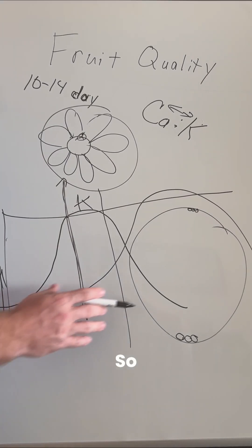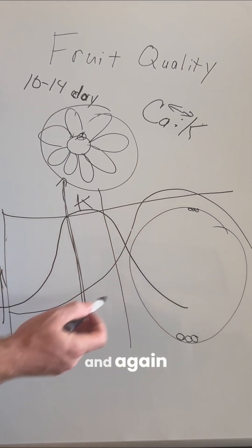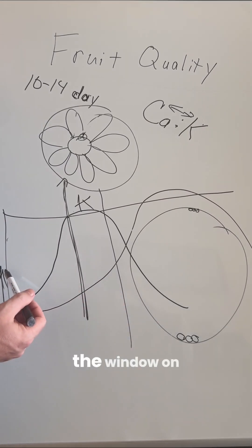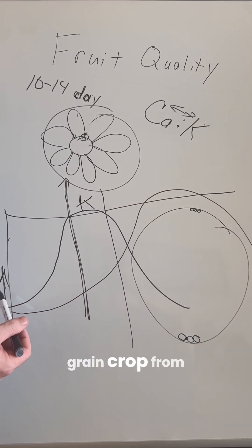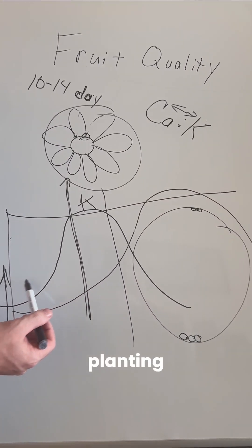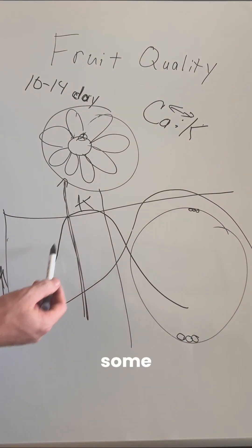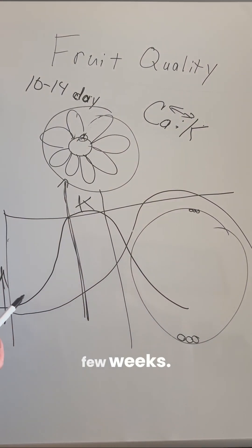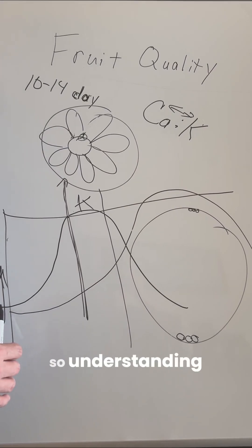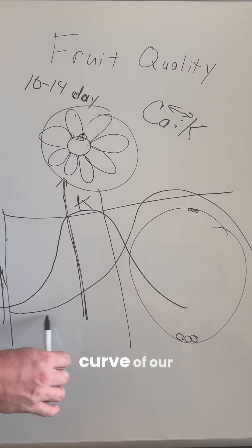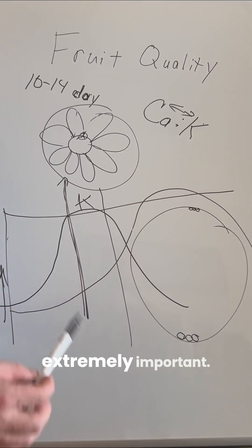This timing is different for different crops. On a grain crop, for example, the window from planting until pollination might be a few weeks on some crops, or a few months on others. So understanding the release curve of your potassium fertilizers is extremely important.